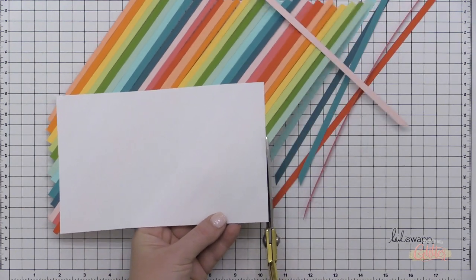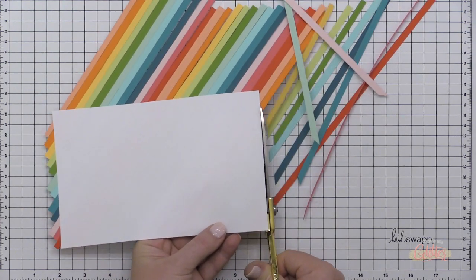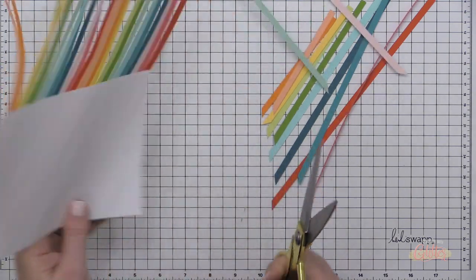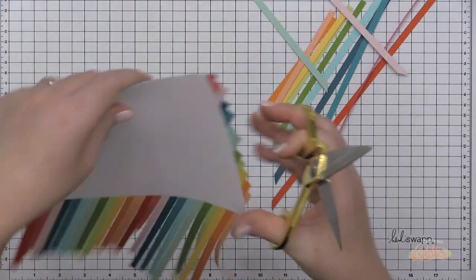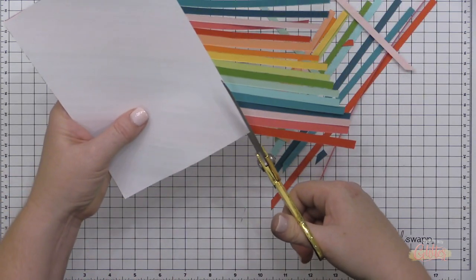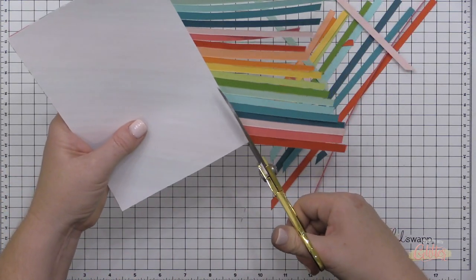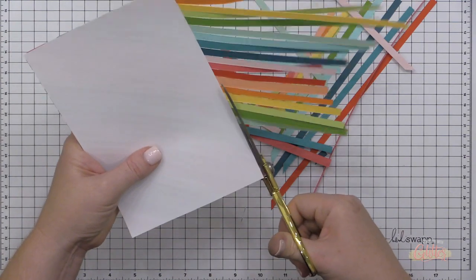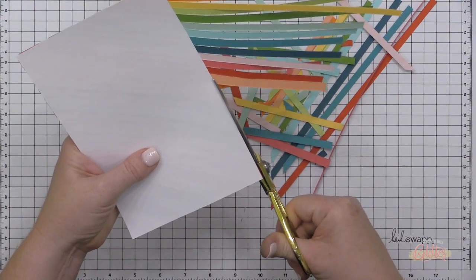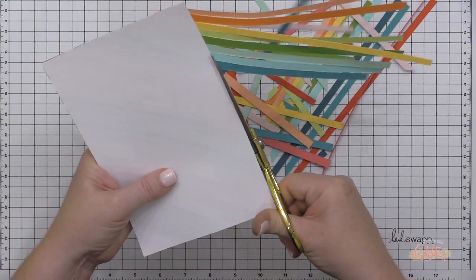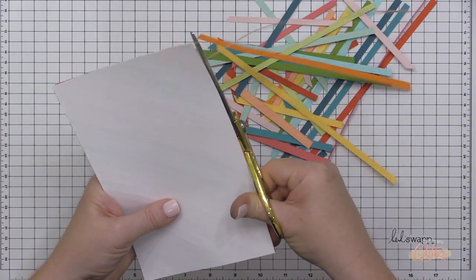Once I have this all covered, I'm going to go ahead and take my scissors and this is so satisfying. I'm going to just trim those strips right off. I'm laying my blade of my scissors right along the edge of this scrap piece of paper that I've covered, and then all of those strips there can then be used again on another scrap piece of paper to create another rainbow background.